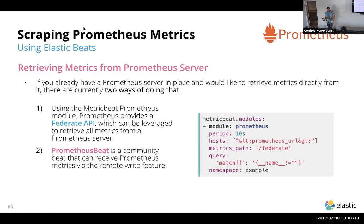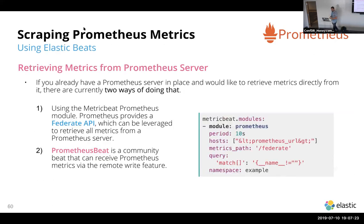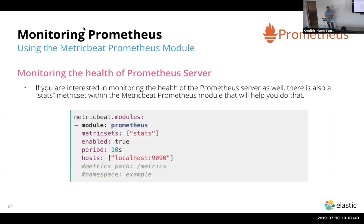In addition to collecting metrics from Prometheus exporters, you can also retrieve metrics from the Prometheus server itself via the federate API. There is also a community Prometheus Beat that can do that as well. And you may want to monitor the health of the Prometheus service itself — if you choose to keep using Prometheus server, you can use Elasticsearch to monitor its health.